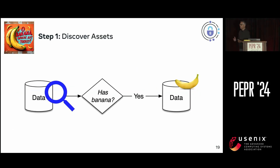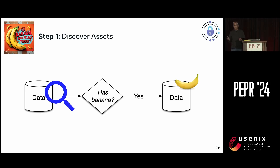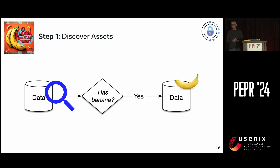The first step for any purpose limitation project is finding where the data you're trying to protect actually is — in this case, the banana. In some cases it may be straightforward; you may know where the banana is entering your systems and trace it from there. Sometimes you need to scan all your data systems and warehouses looking for patterns to identify it. You might have a fruit classifier that proposes something might be a fruit, and you examine it to determine whether it's a banana. Once you've made that determination, you annotate those assets with a banana label.